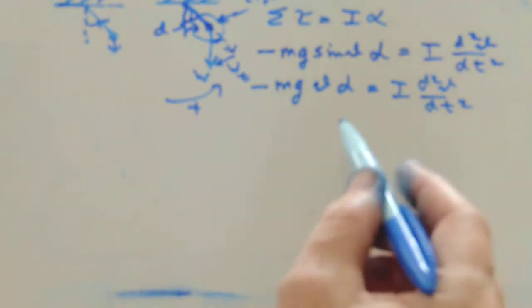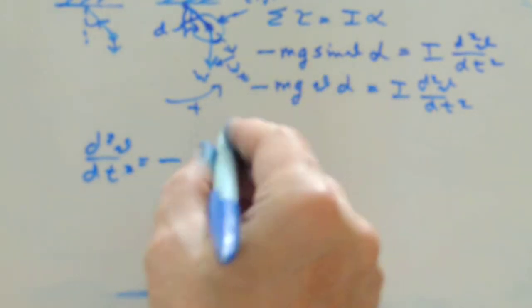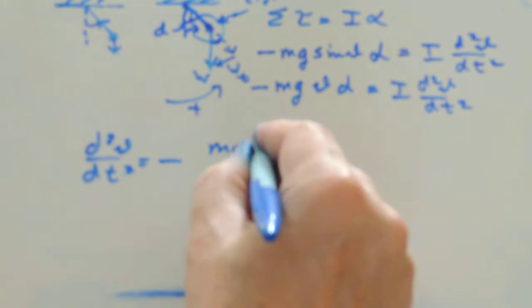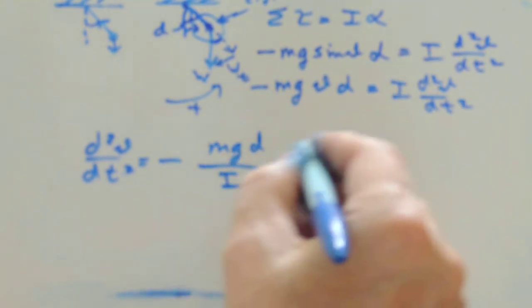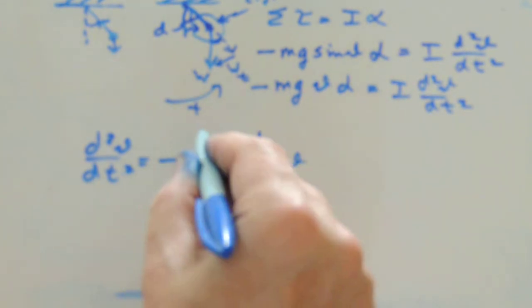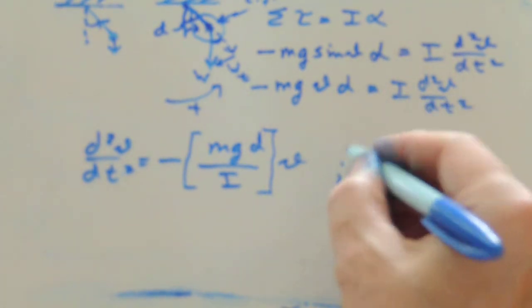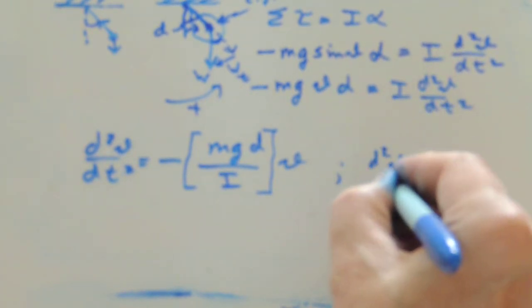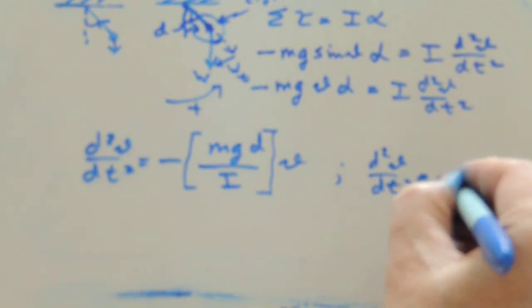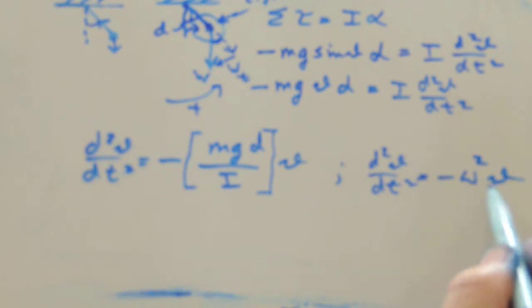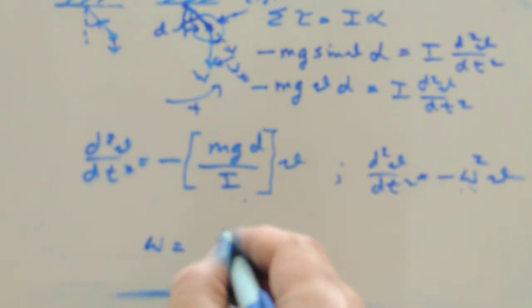But, once we're there, we can very rapidly proceed. Let's isolate the second derivative over here, and we can see that it looks like, what, Mgd, and then we'll divide by I, and then that will be theta, and we're right back at that very famous equation that we've written previously, and we know that when we have simple harmonic motion, this coefficient of the theta term in the differential equation is our angular frequency squared, and so we have exactly what we need.